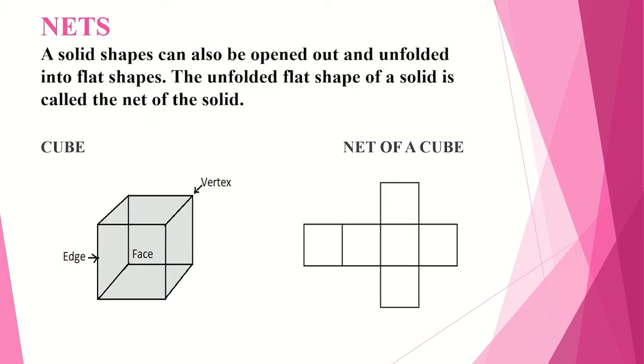And the next one is nets. So nets is when you take a solid shape and when it is opened out and unfolded into flat shape. This unfolded flat shape of a solid we call the net of the solid.